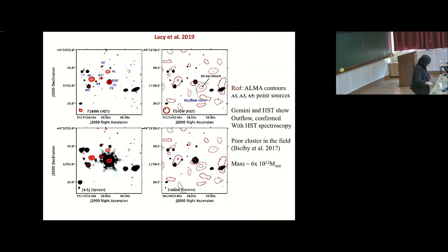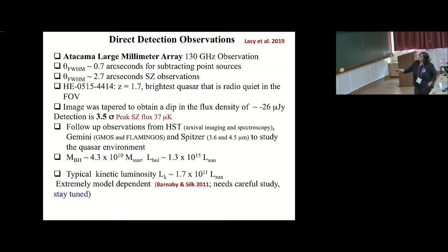After the tapering, they did detect about 37 microkelvin, like a brightness temperature difference. This is minus 37 microkelvin, typically a 3.5 sigma peak. Now the interpretation of that, why is this SZ effect first? And second, if it's SZ effect, can we constrain the parameters of feedback? That is still, we use some model to do it, but that needs careful consideration.